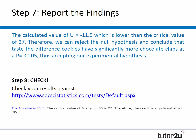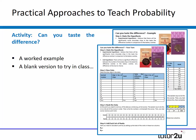The final job is to report the findings. Our U value of 11.5 is lower than our critical value of 27. As a result, we reject the null hypothesis and conclude that the Taste the Difference cookies had significantly more chocolate chips at a 0.05 level, and we accept our experimental hypothesis. Students hopefully understand through this activity that because we're confident there is a difference between the two groups, we reject the null and accept the experimental hypothesis — knowing there's at least a 95% chance results were caused by the IV.